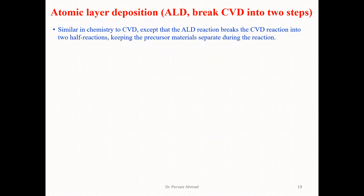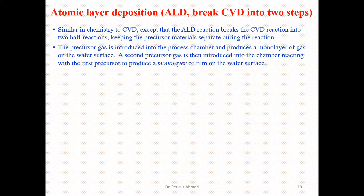ALD is similar in chemistry to CVD, except that the ALD reaction breaks the CVD reaction into two half reactions, keeping the precursor materials separate during the reactions. The precursor gas is introduced into the process chamber and produces a monolayer of the gas on the wafer surface. A second precursor gas is then introduced into the chamber, reacting with the first precursor.